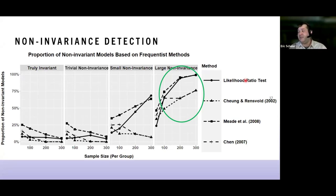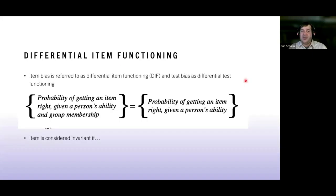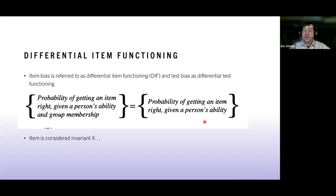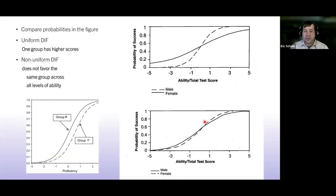The third option is differential item functioning (DIF) — a broad term related to measurement invariance and bias detection, but from an item response theory perspective. It refers to the probability of getting an item right given the person's ability and group membership. We want that probability to be equivalent across groups. If individuals in both groups have the same underlying ability (theta) but there are differences based on group membership, we have differential item functioning.